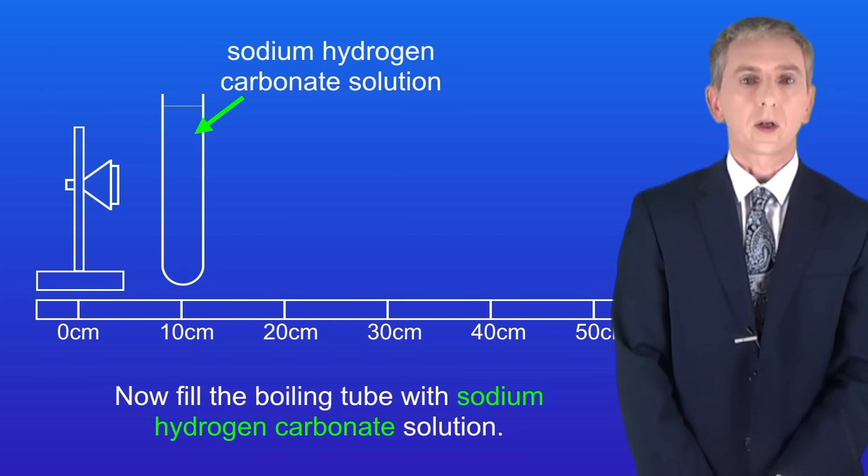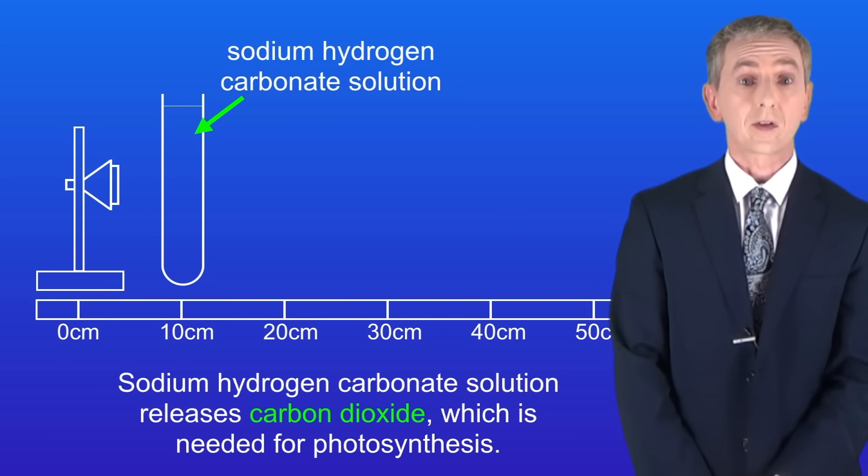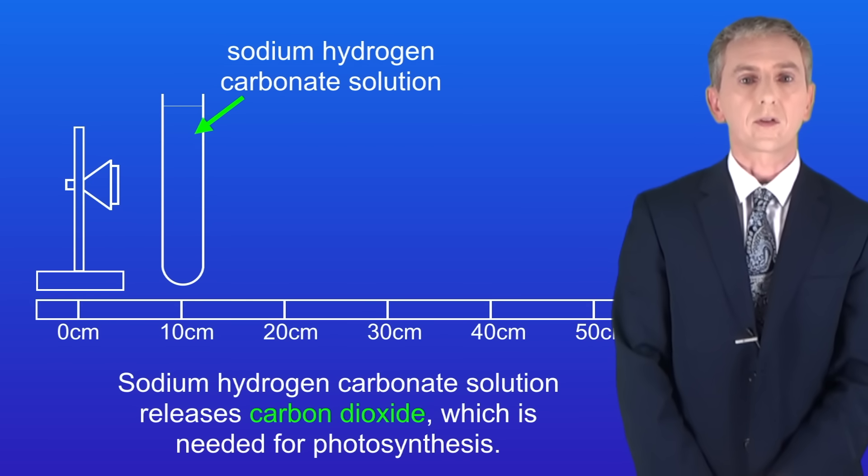We fill the boiling tube with sodium hydrogen carbonate solution. Sodium hydrogen carbonate solution releases carbon dioxide which is needed for photosynthesis.